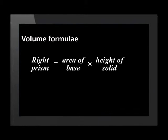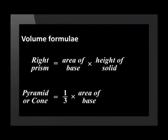To find the volume of a right prism, we multiply the area of the base by the height of the solid. The volume of a pyramid or cone is equal to a third times the area of the base times the height of the solid.